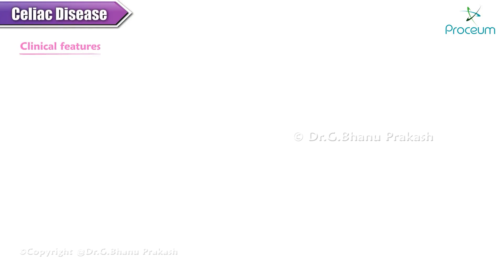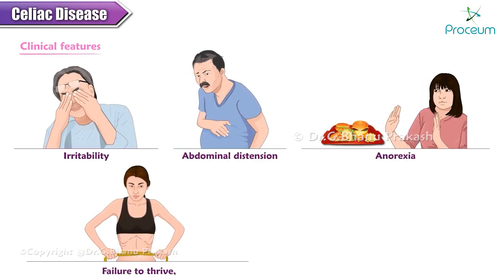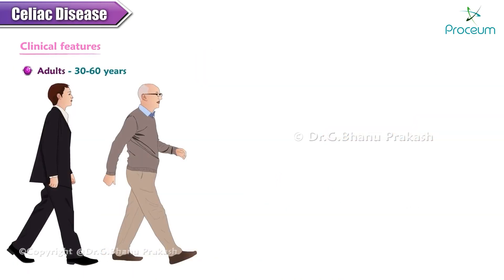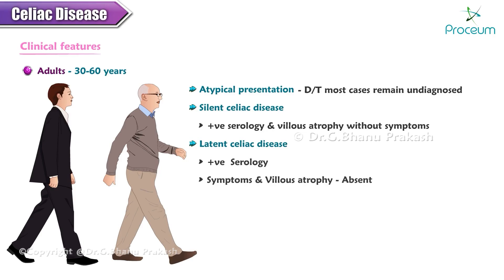Most pediatric cases present with classic symptoms of irritability, abdominal distension, anorexia, failure to thrive, weight loss or muscle wasting. Extensive diarrhea can lead to severe dehydration, electrolyte depletion, and metabolic acidosis. Adults most commonly present between ages 30 to 60 years and usually have an atypical presentation, which is why most cases remain undiagnosed. It can present as silent celiac disease with positive serology and villus atrophy but without symptoms, or as latent celiac disease with positive serology but without symptoms or villus atrophy.